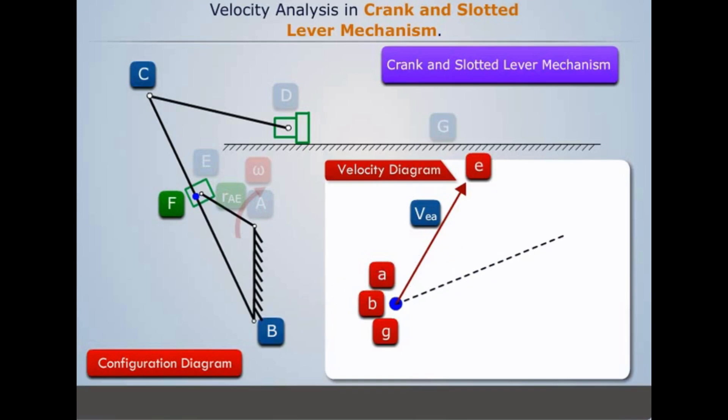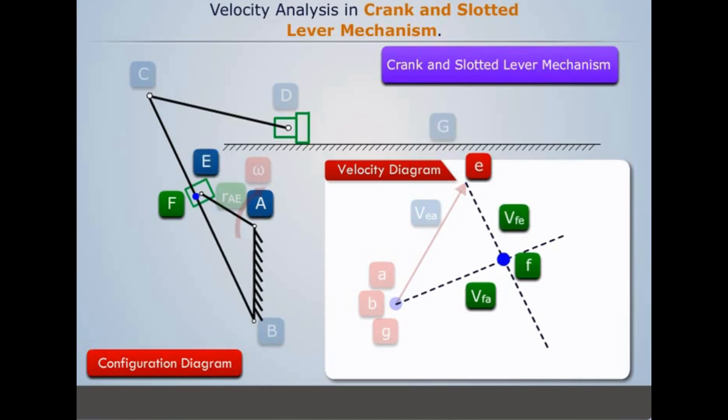Now the velocity of point E with respect to point F will be parallel to link BC. But as its magnitude is unknown, we draw a line of unknown length parallel to link BC from point E on the velocity diagram. The point of intersection of this line and the line representing velocity of the slider E locates the position of point F, thus the velocity of point F with respect to point A, and the velocity of point E with respect to point F.